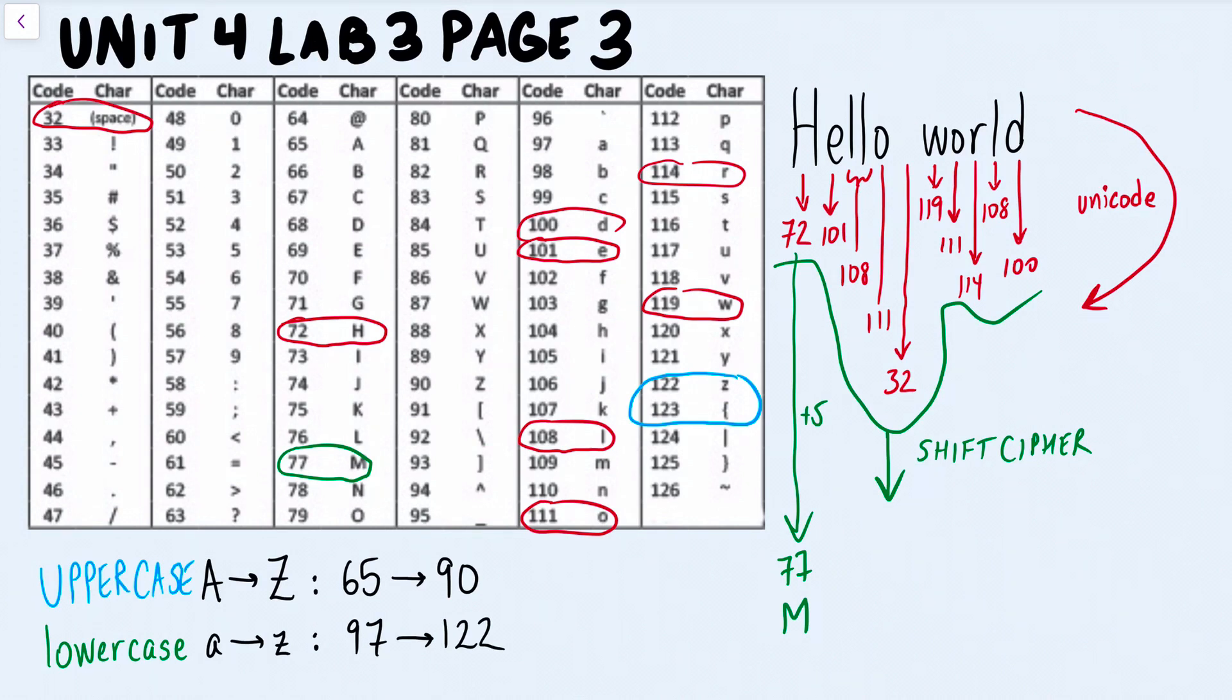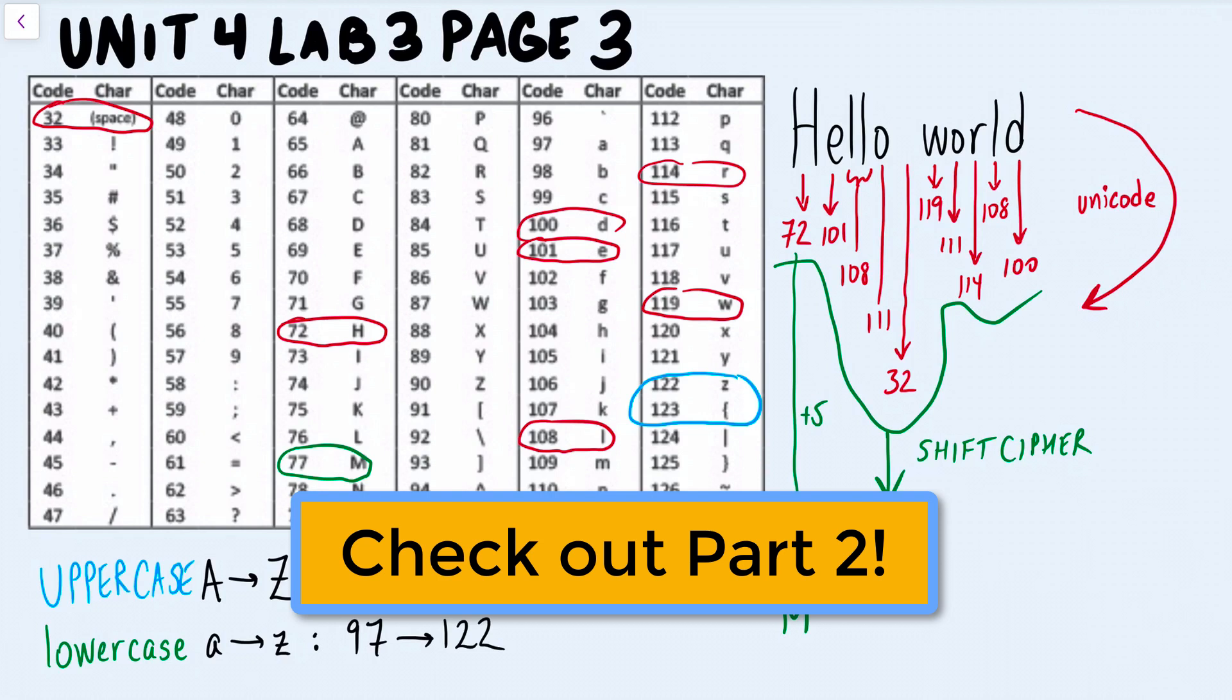Just to give you a hint, what you might want to do is make sure that the z wraps around. So the 122, if you want it to be letter a, if you shift 1, you might want it to wrap around, and I'll show you the math for that maybe a little bit later or in a second video, depending on how long this video runs.